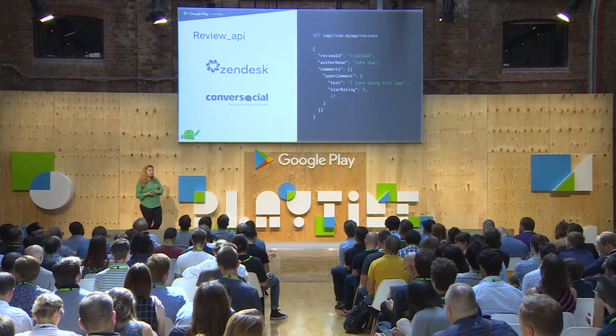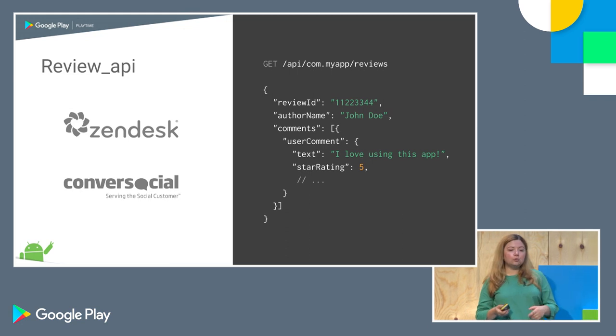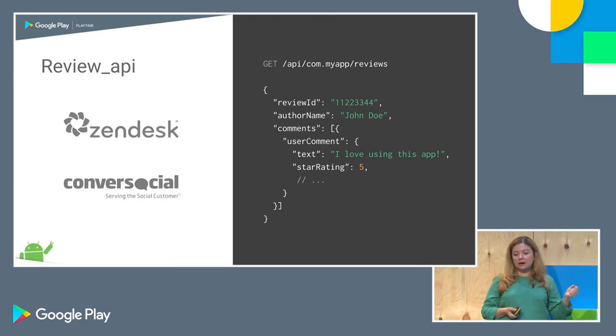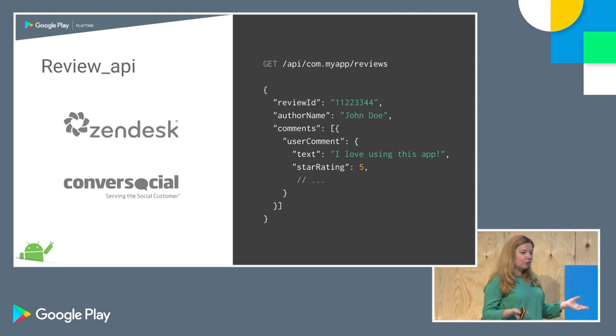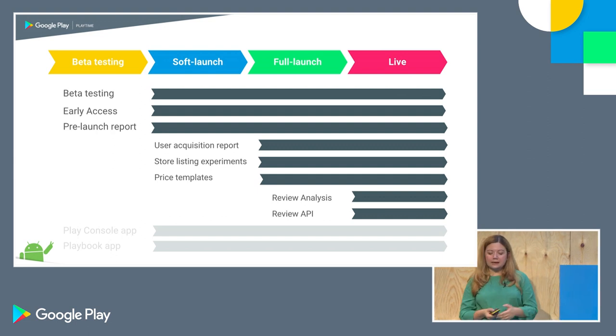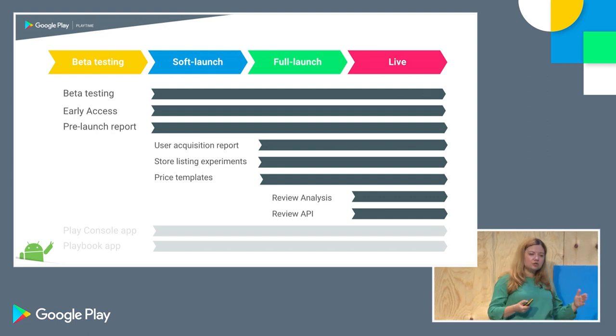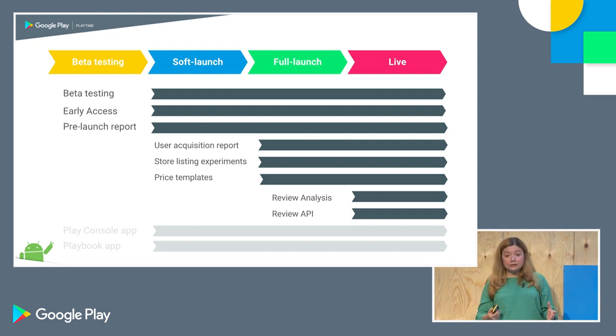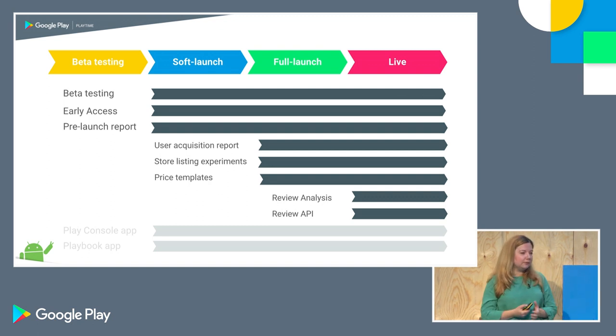We also have a new Reviews API. If you want an automated way to fetch your reviews from Google Play and reply to them, it's only a couple of lines of code to integrate. If you'd rather not do that, there is also out-of-the-box integration with popular CRM tools like Zendesk and Conversocial. Reviews Analysis and the Review API are most critical once your app is live and you're receiving feedback from users.